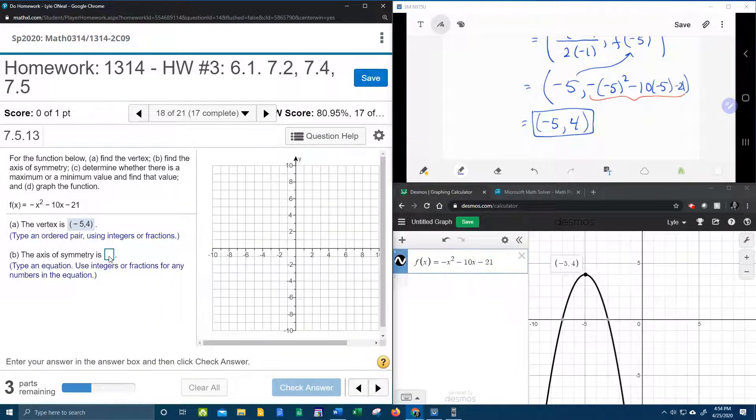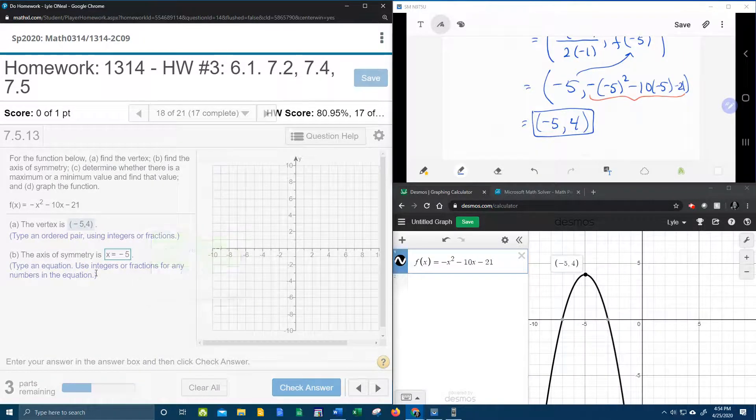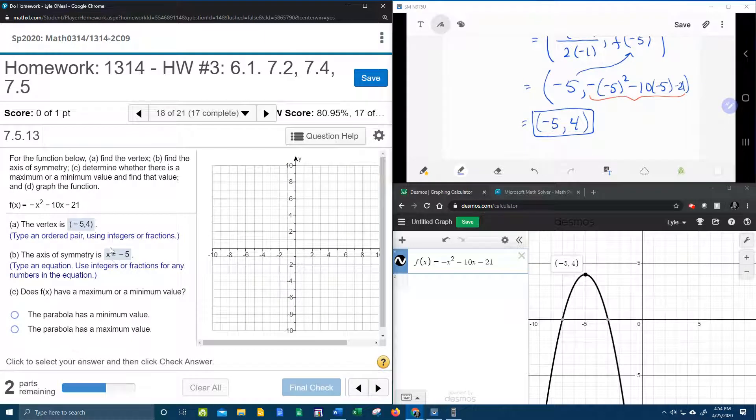Axis of symmetry. It turns out that the axis of symmetry is always x equal the x coordinate of the vertex. Did you catch that? I'll say it again. The axis of symmetry is always x equal the x coordinate of the vertex. And you do have to have the x equal, if you just put negative 5, it won't count it correct.